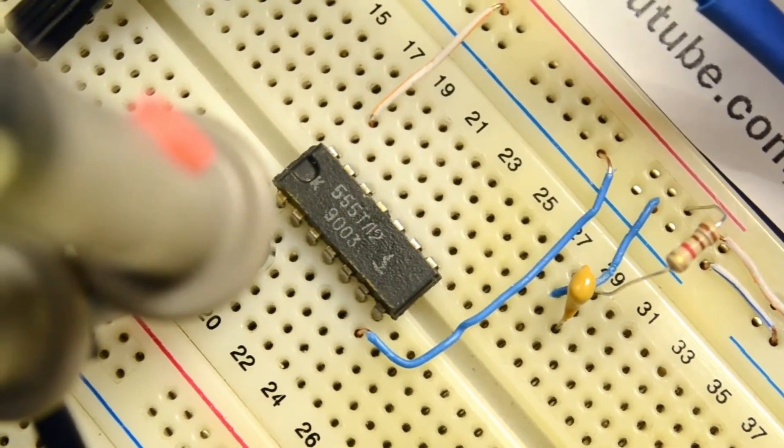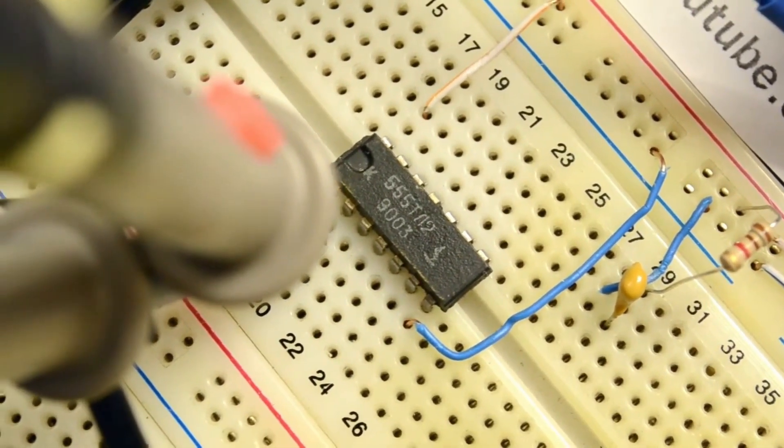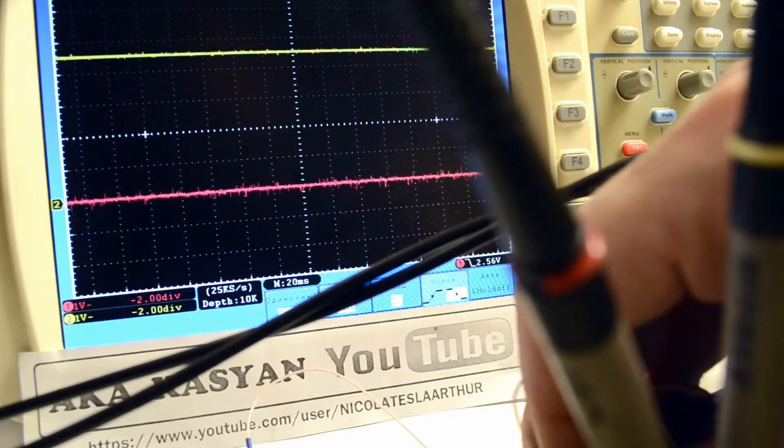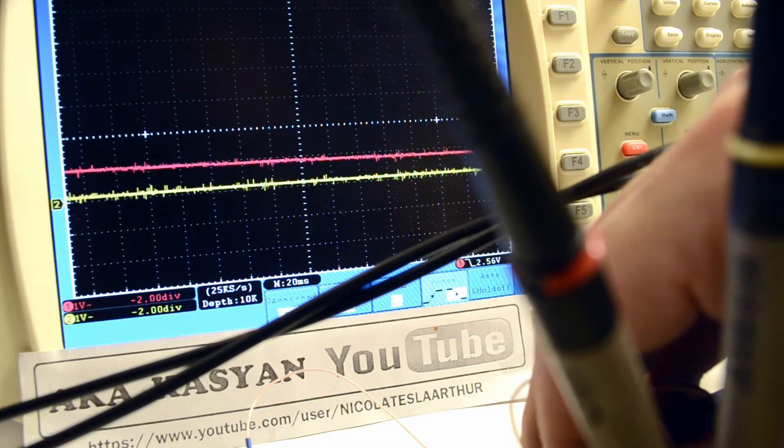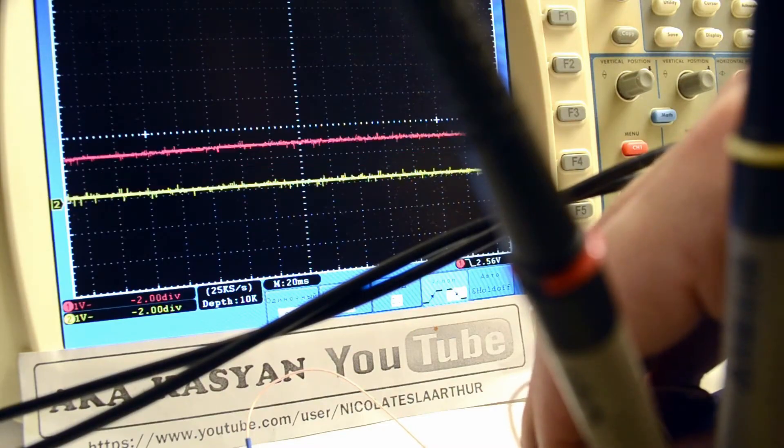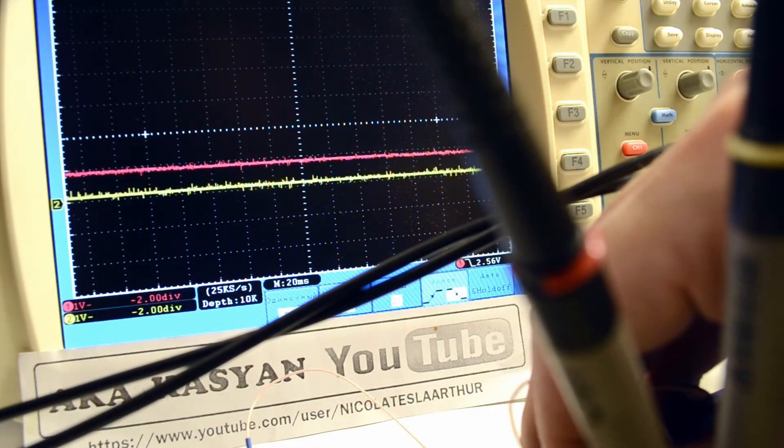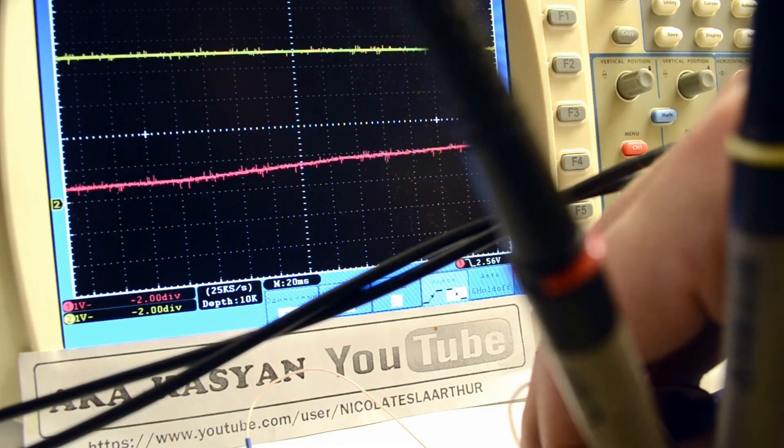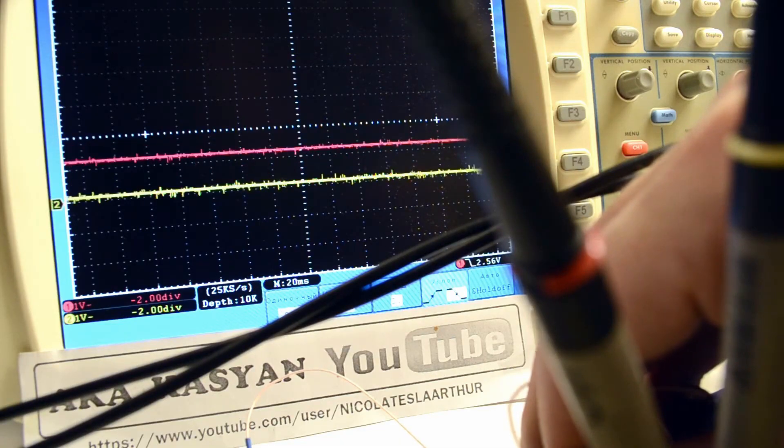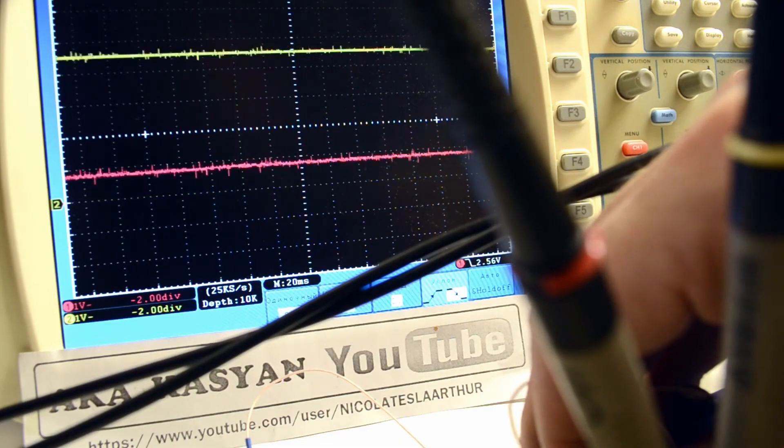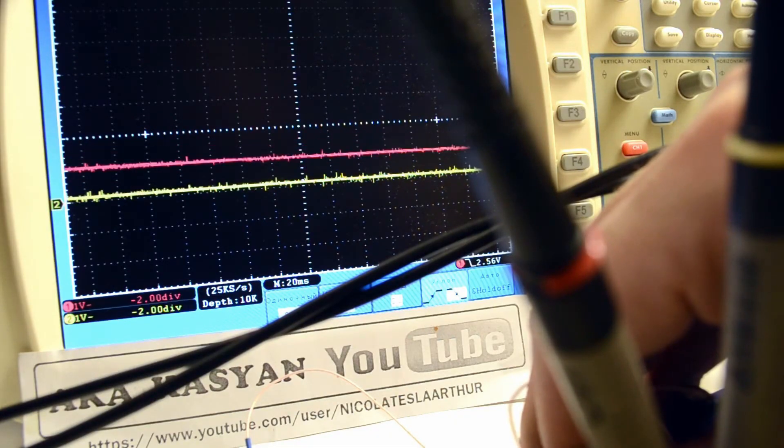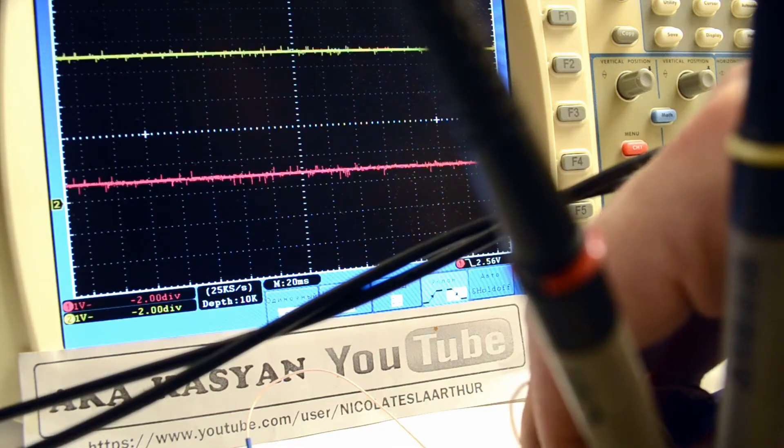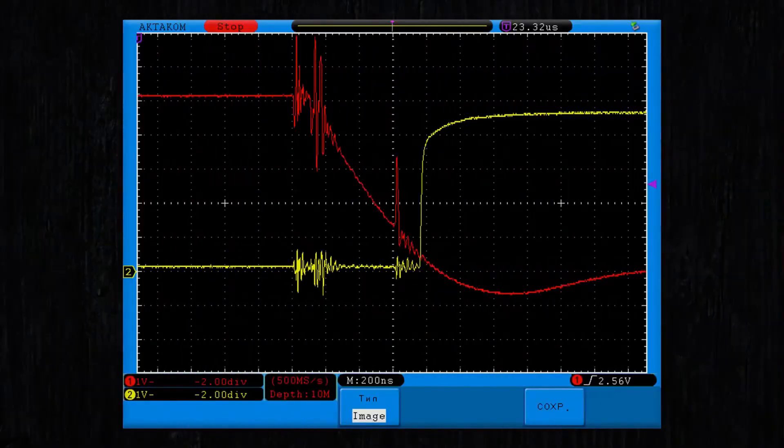And here we come to the Schmitt trigger. Let's also apply the signal from the potentiometer to the buffer element, the Schmitt trigger, which has feedback resulting in a wide hysteresis loop of 800 millivolts. That is, when the voltage drops to the level of 0.9 volts, the one at the output will become 0. And when the level rises back, the switching will only occur when it reaches the level of 1.7 volts. And the signal with bounce, passing through this element, takes on the following form.